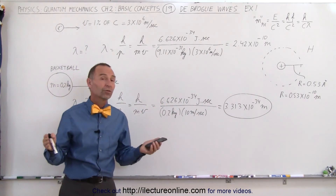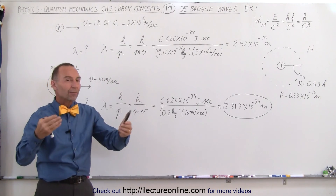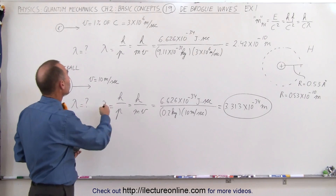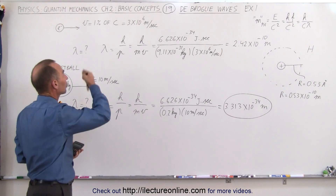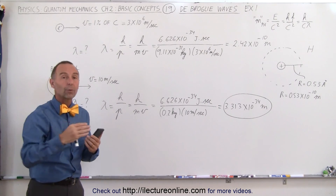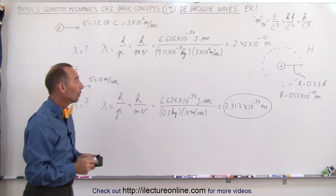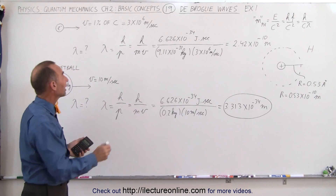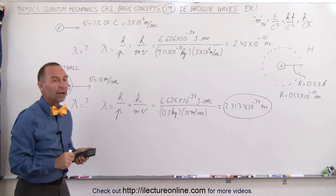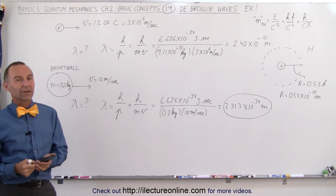In the macro world — in normal objects and the normal world we live in — we will never notice this concept that particles act like waves as they move. We can only observe that in the quantum world, never in the macro world. And that's how the de Broglie waves work.